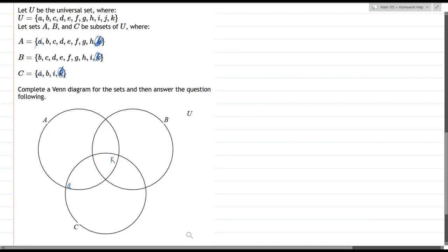What else? B, oh, there we go. B is in all three sets, so B is going to go in the center, right next to the K.